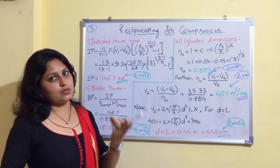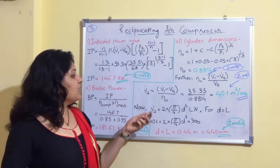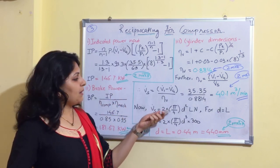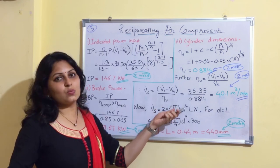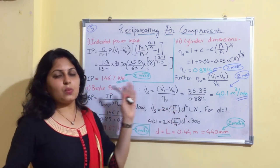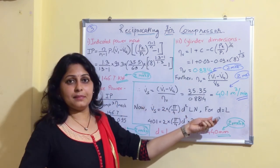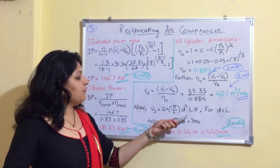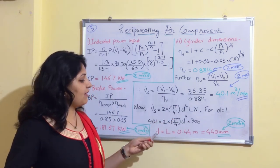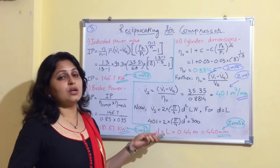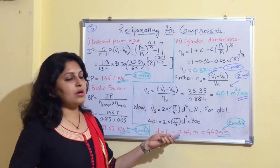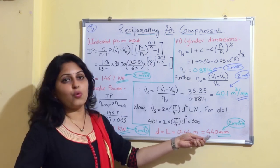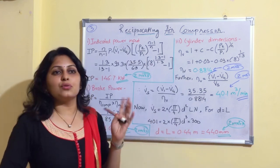Since there are two cylinders for single stage, the swept volume formula is Vs = 2 · (π/4) · D² · L · N. As given in the problem, diameter equals stroke (D = L). Substituting and solving, we get D = L = 0.44 m = 440 mm.